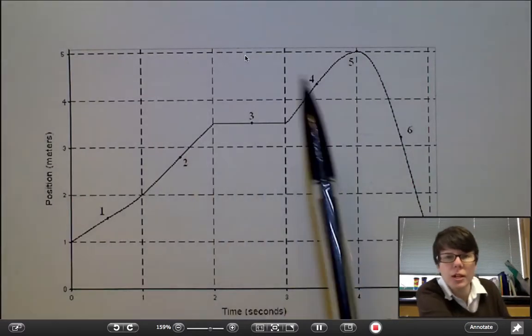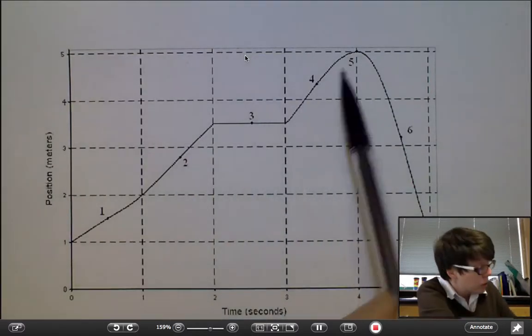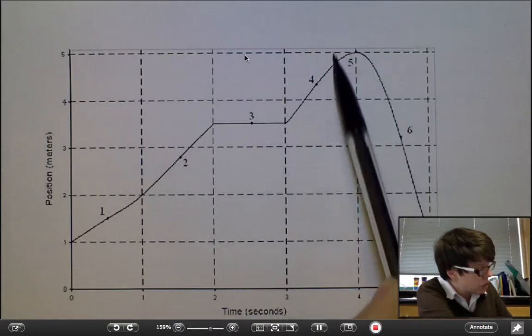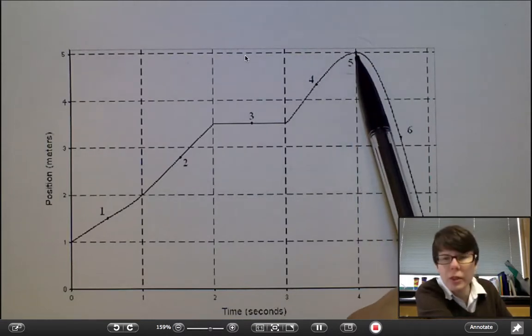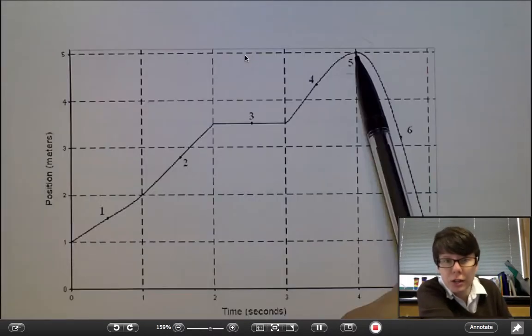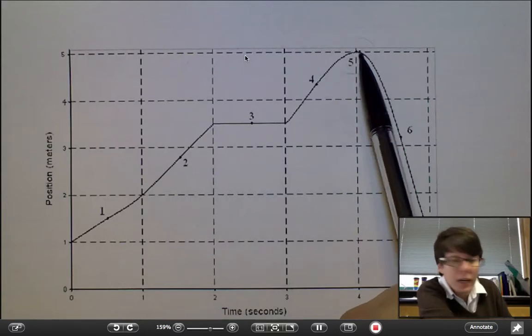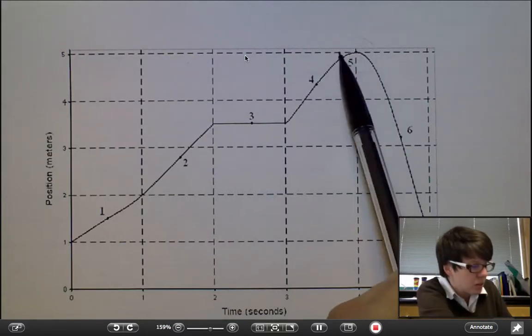You'll notice in the answer choices I've already told you they're equal. Remember the instantaneous velocity here would be the slope of that curve at its vertex. The slope of a curve at its vertex like this is going to be zero.